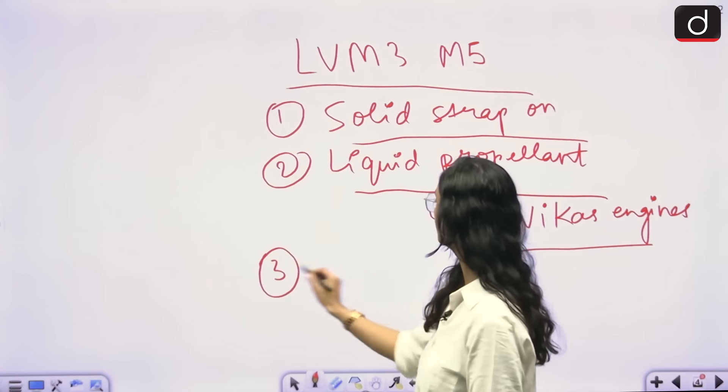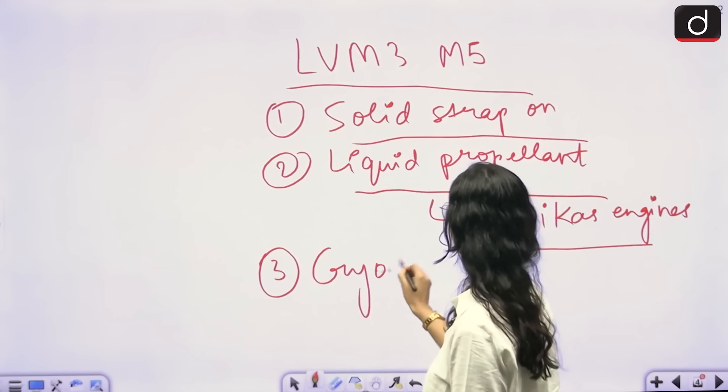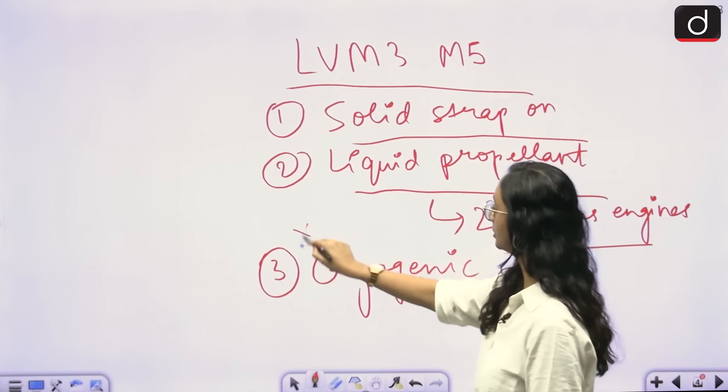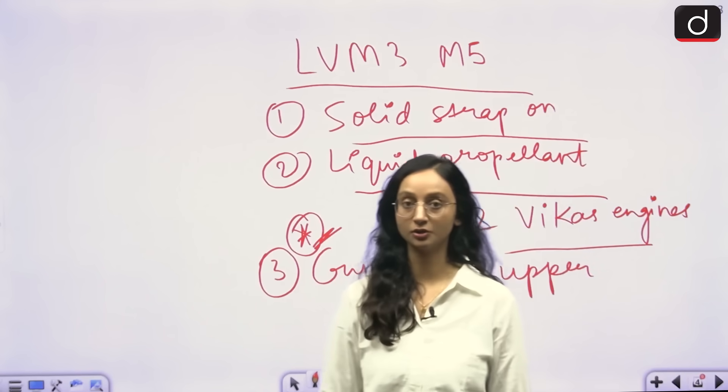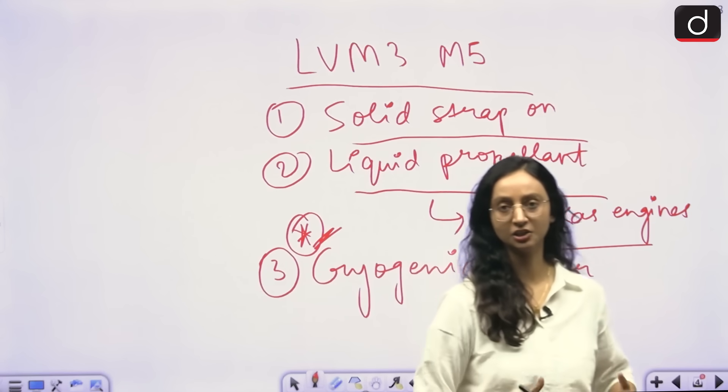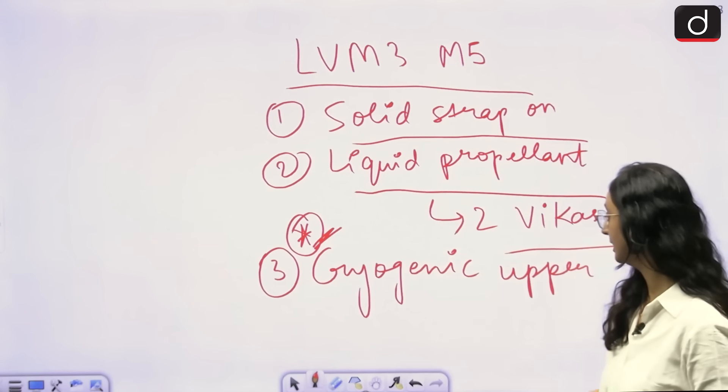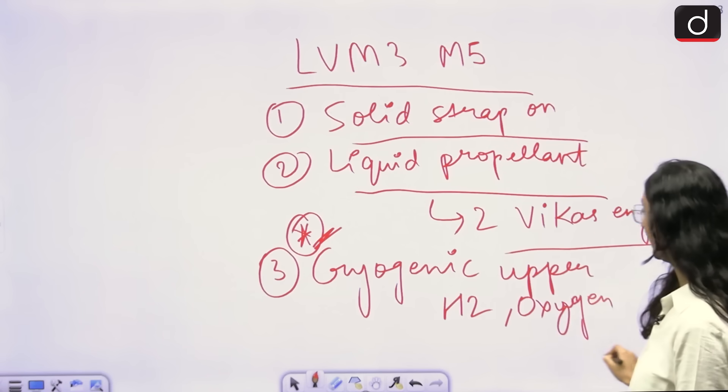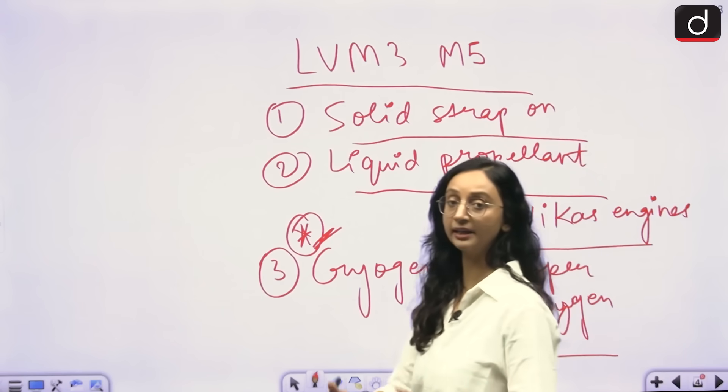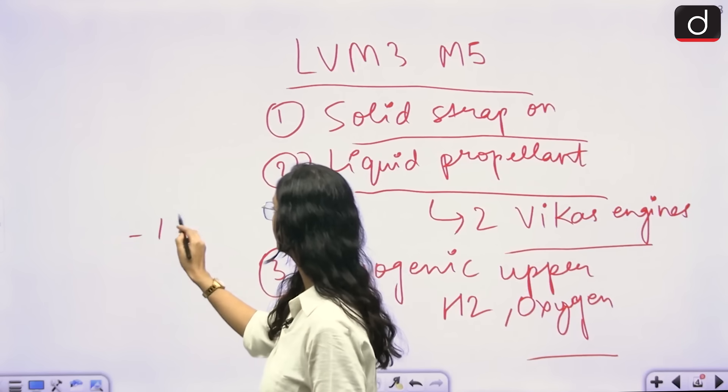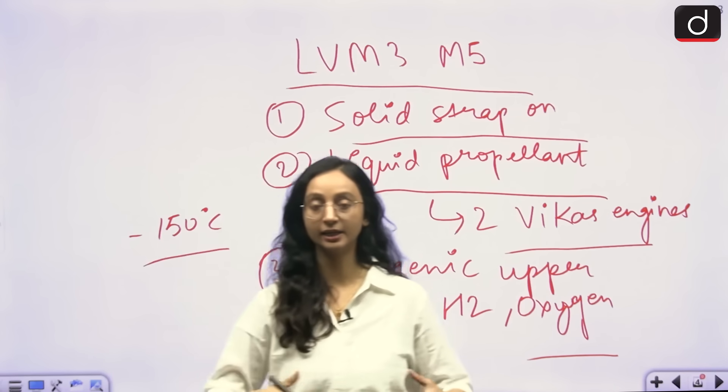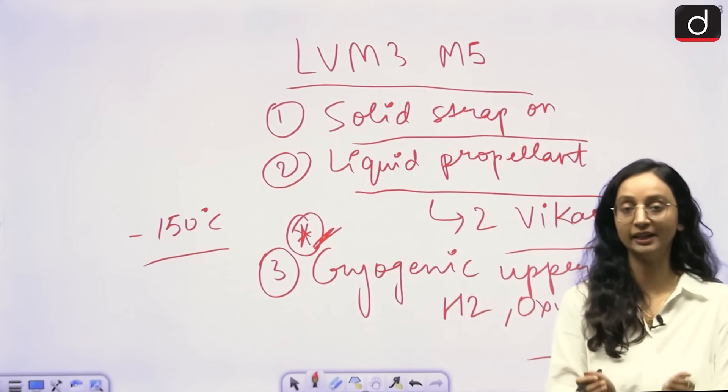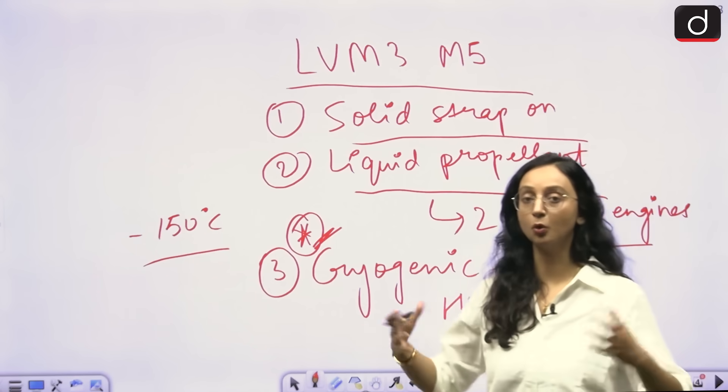And then finally, we have the cryogenic upper stage. This is the most important stage of a launch vehicle because here it is very energy dense. Here we are making use of liquid propellants like liquid hydrogen and liquid oxygen, and we are storing them at very low temperatures, temperatures as low as minus 150 degrees Celsius. So they are highly energy dense because we are able to store a lot of fuel into very compact, very dense spaces. And that is why we are able to store more and more fuel.